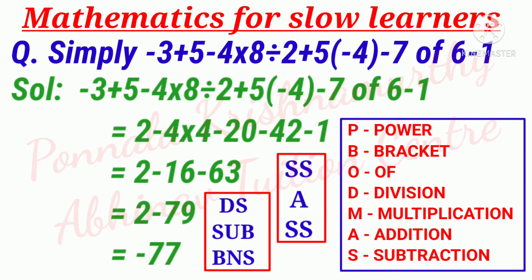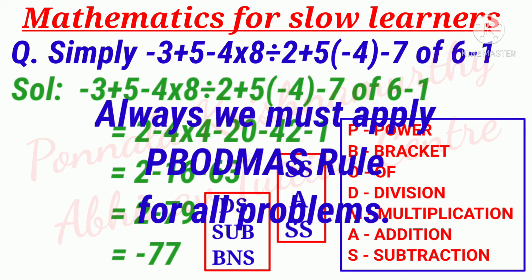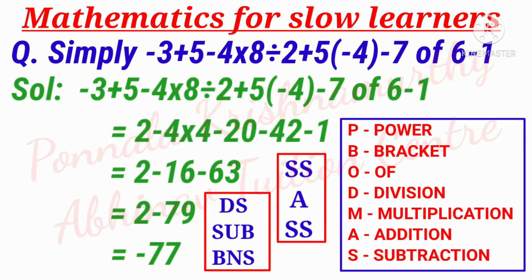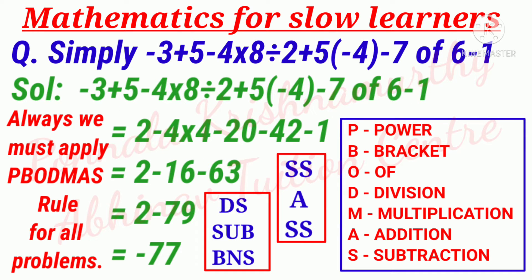Solution: -3 + 5 - 4 × 8 ÷ 2 + 5 × (-4) - 7 of 6 - 1. Here we have to apply PEMDAS rule: P - Power, B - Bracket, O - Of, D - Division, M - Multiplication, A - Addition, S - Subtraction.